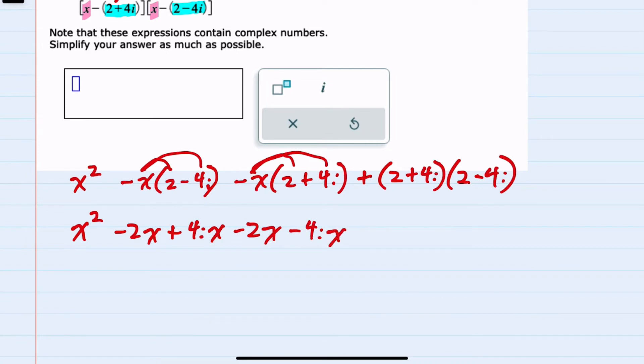And then for this last piece, I again have to distribute first multiplying the 2 times 2 as a plus 4. Then the 2 times a minus 4i would be a minus 8i. Distributing the plus 4i would be 4i times 2, a plus 8i. 4i times a minus 4i would be a negative 16i squared.